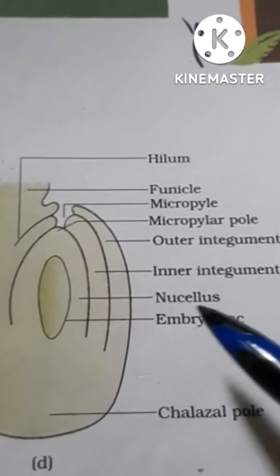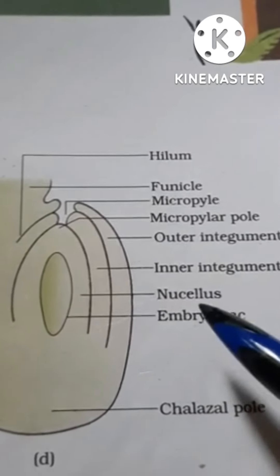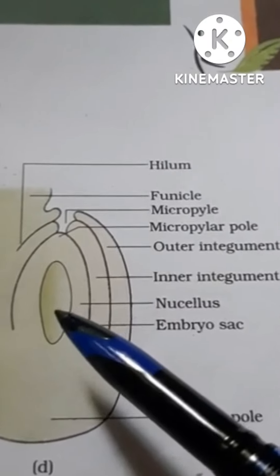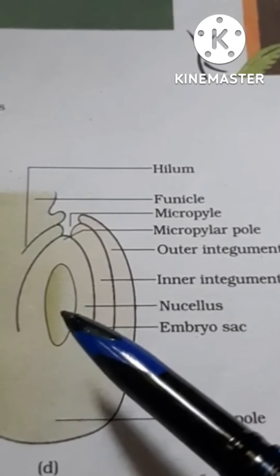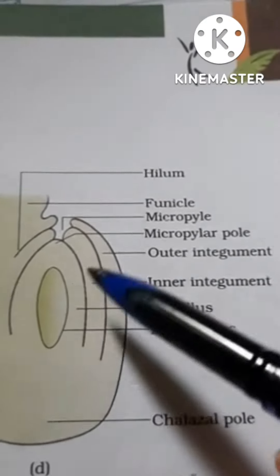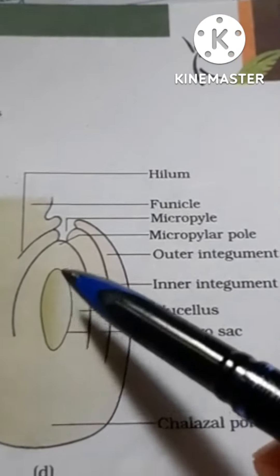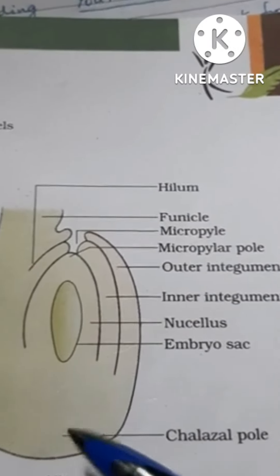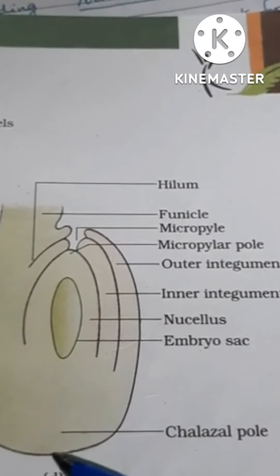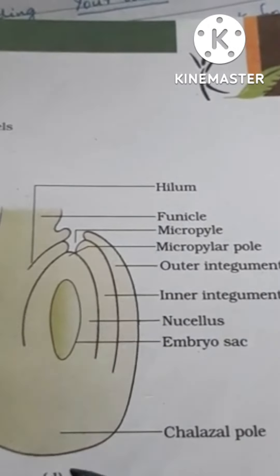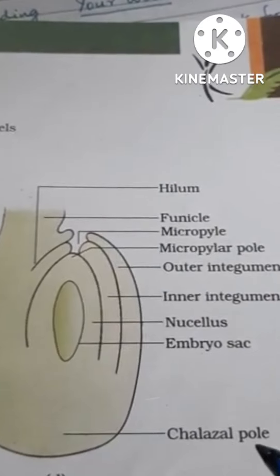The nucellus has food material to provide for the growing embryo sac, because later, inside the embryo sac, we get the egg and other cells. The opposite end to the micropyle is called the chalazal pole.